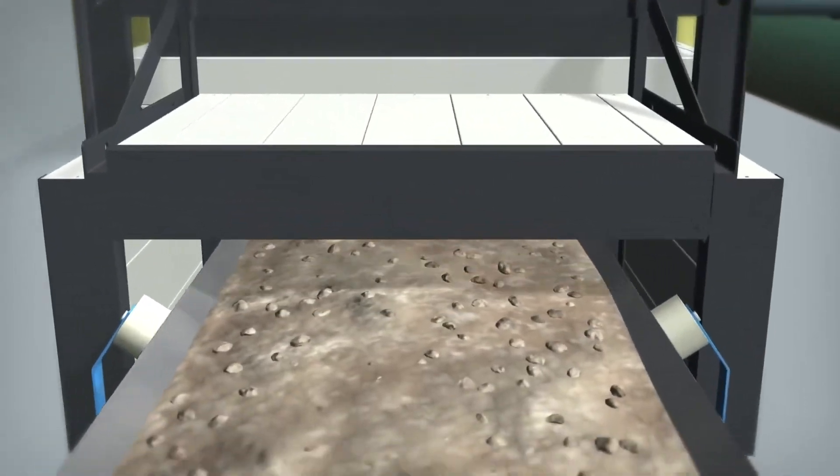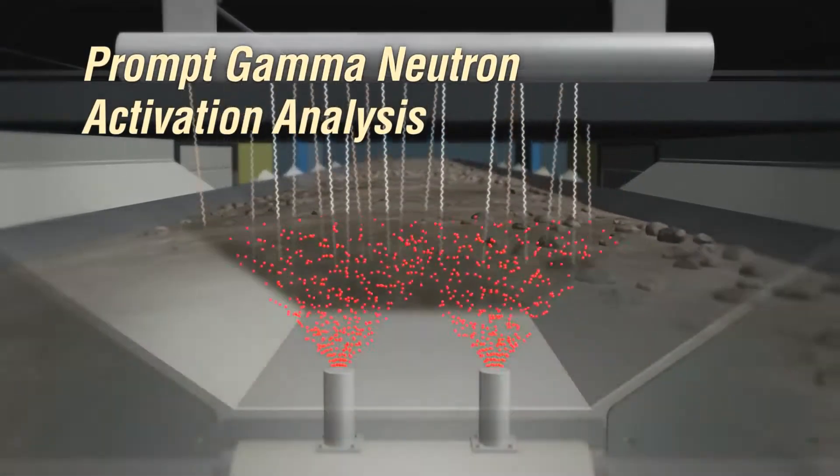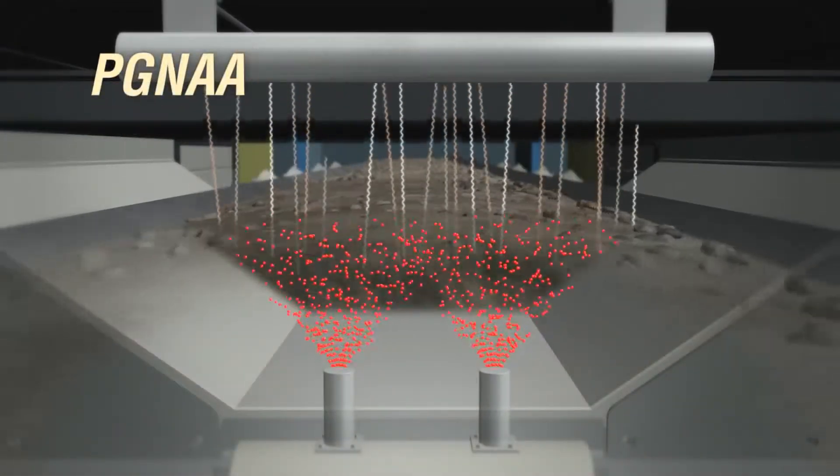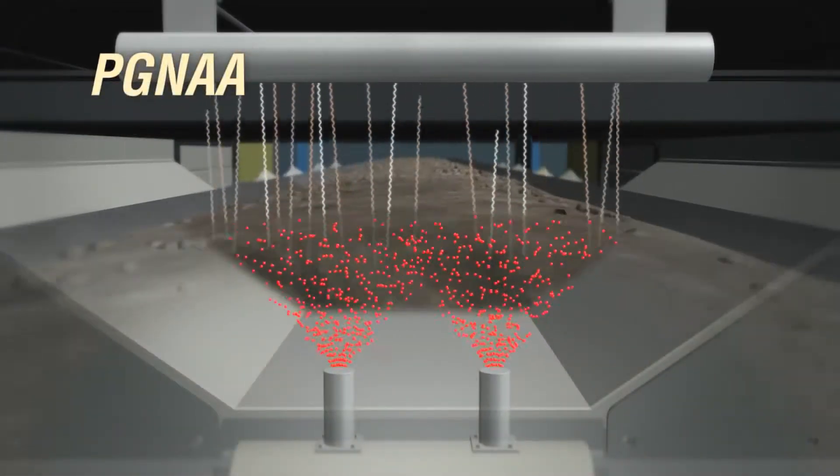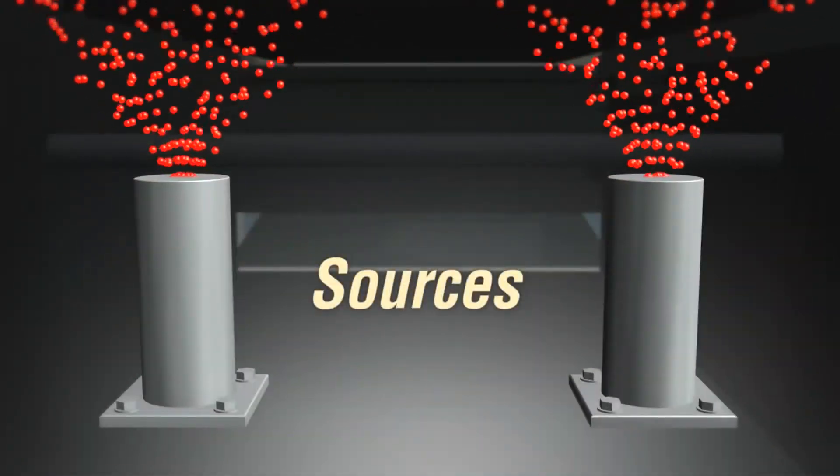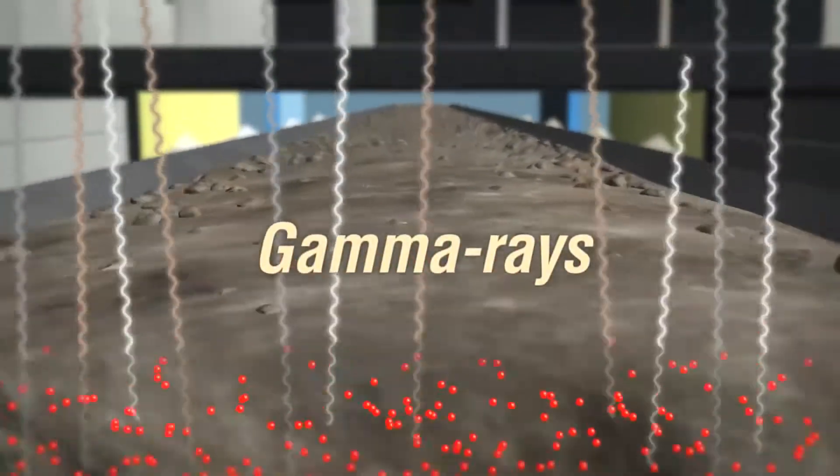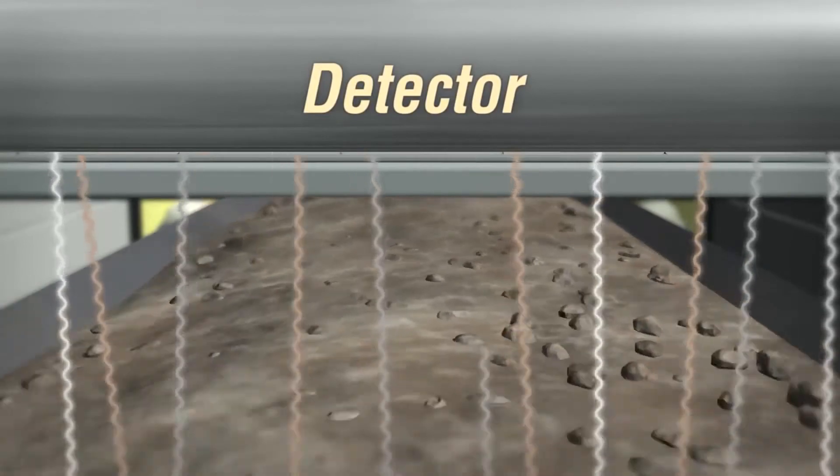Thermo Scientific's CB Omni uses a measurement technique called Prompt Gamma Neutron Activation Analysis, or PGNAA for short. Neutrons from a source located below the conveyor interact with nuclei in the raw materials. This interaction